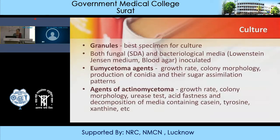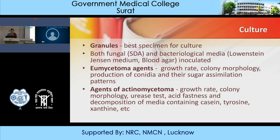For culture, the best specimen is granules. Both fungal and bacteriological media should be used. For fungal media, Sabouraud Dextrose Agar is used. For bacteriological media, especially for Nocardia, Lowenstein-Jensen medium and blood agar are used. Eumycetoma agents generally show late growth; colony morphology, conidia production, and sugar assimilation patterns help identify the fungi. For Actinomycetoma, growth rate, colony morphology, urease test, acid-fastness, and decomposition of casein, tyrosine, and xanthine are assessed for identification.